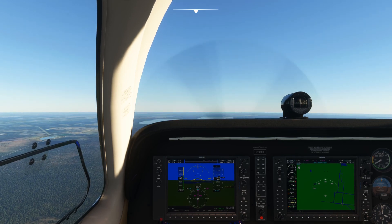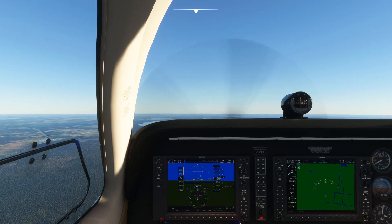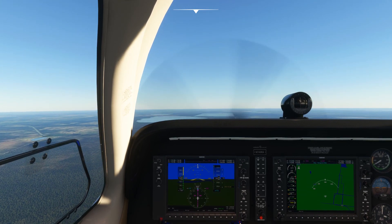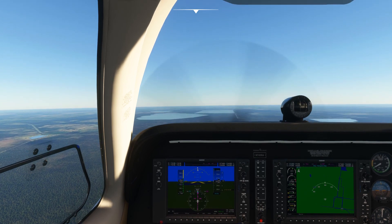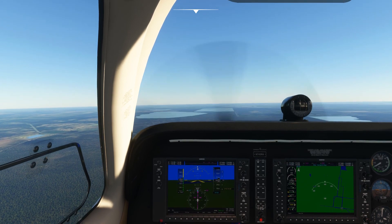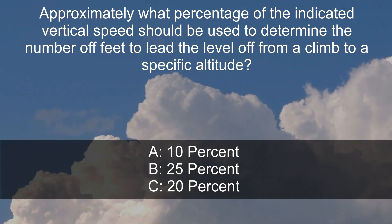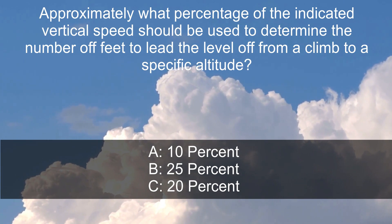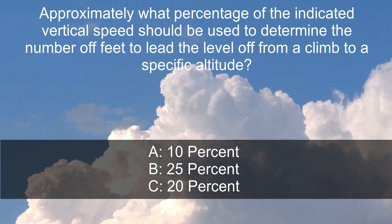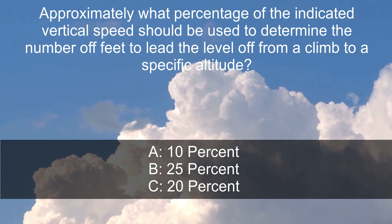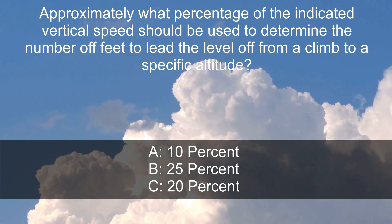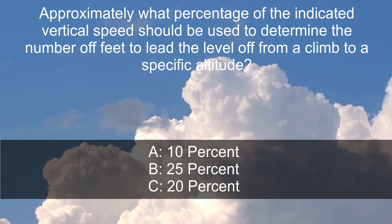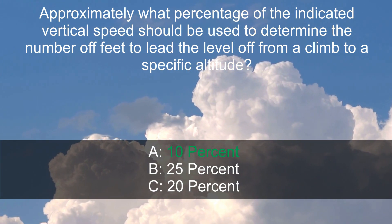This technique works with all types of aircraft, fast or slow. So the answer to the question — approximately what percentage of the indicated vertical speed should be used to determine the number of feet to lead the level off from a climb to a specific altitude — is A: 10 percent.